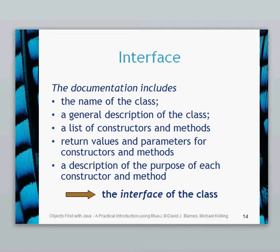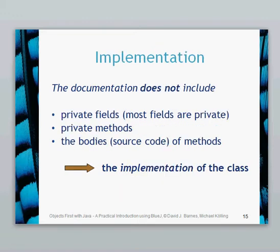Often, when architects design code, they'll provide the interface between each of the classes so that the actual coders and writers of the code will have a structure to adhere to. The implementation is the bit that we're not interested in. This includes things like private fields, private methods, and the actual source code of methods. We're not interested in how that works on the classes within the API — we're just interested in how we can make use of those classes.